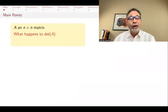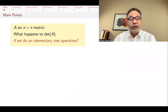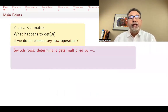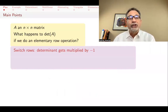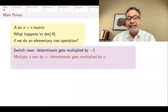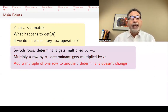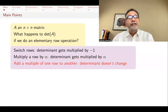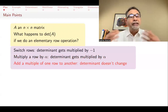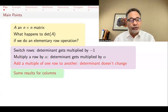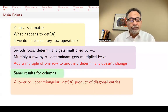We have an n-by-n matrix. What happens to the determinant of A if we do an elementary row operation? Here are the answers. If you switch two rows of the matrix, the determinant gets multiplied by minus one. If you multiply a row by a scalar alpha, the determinant gets multiplied by alpha. And if you add a multiple of one row to another — the third elementary row operation — the determinant actually does not change. The same results are also true for columns.